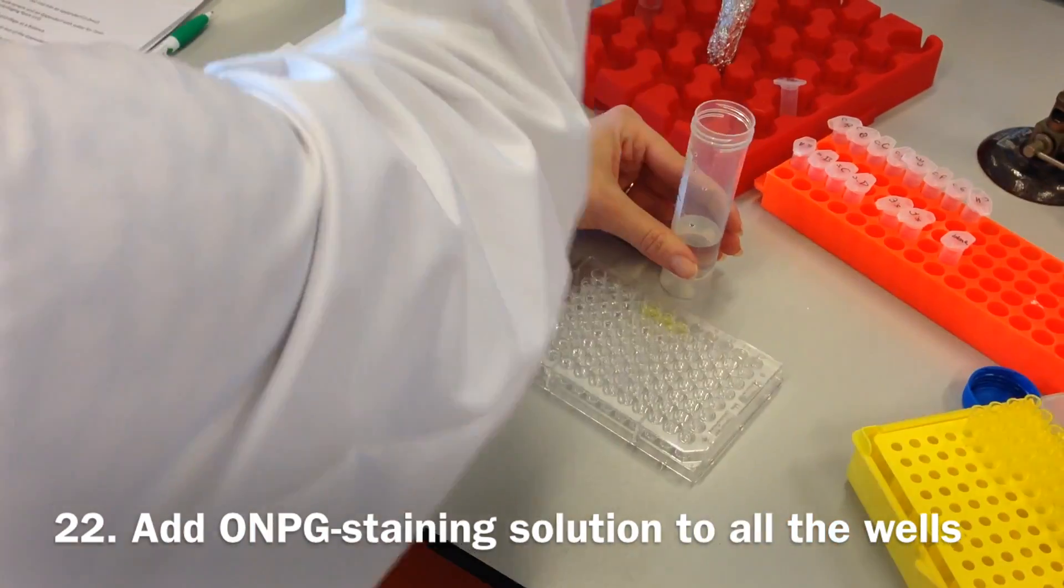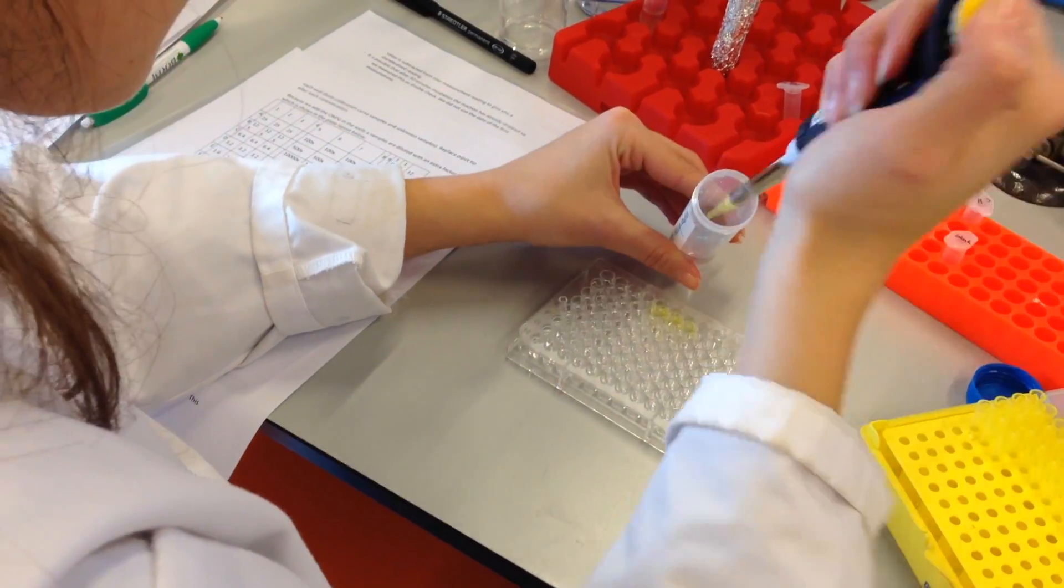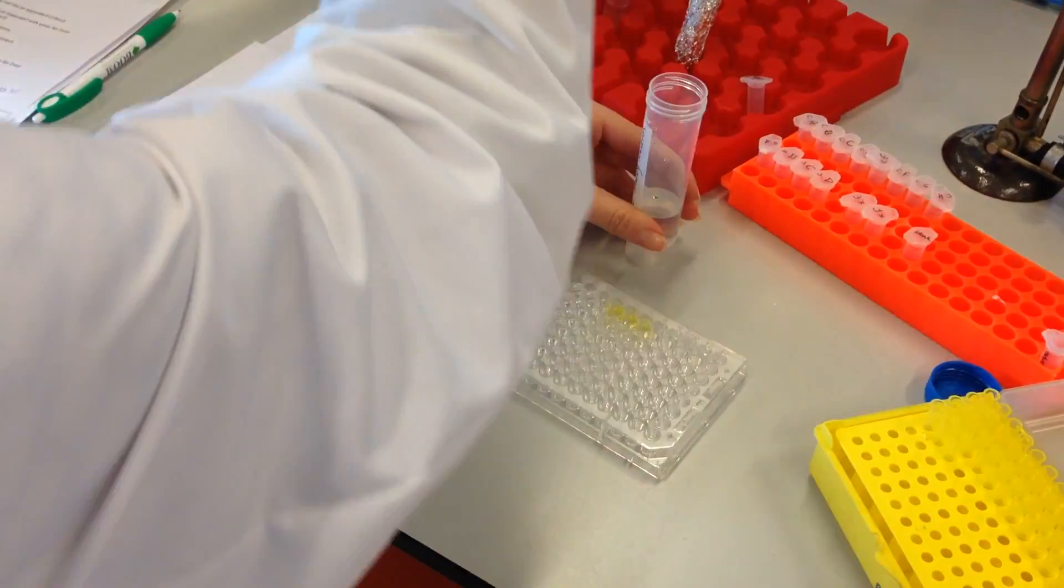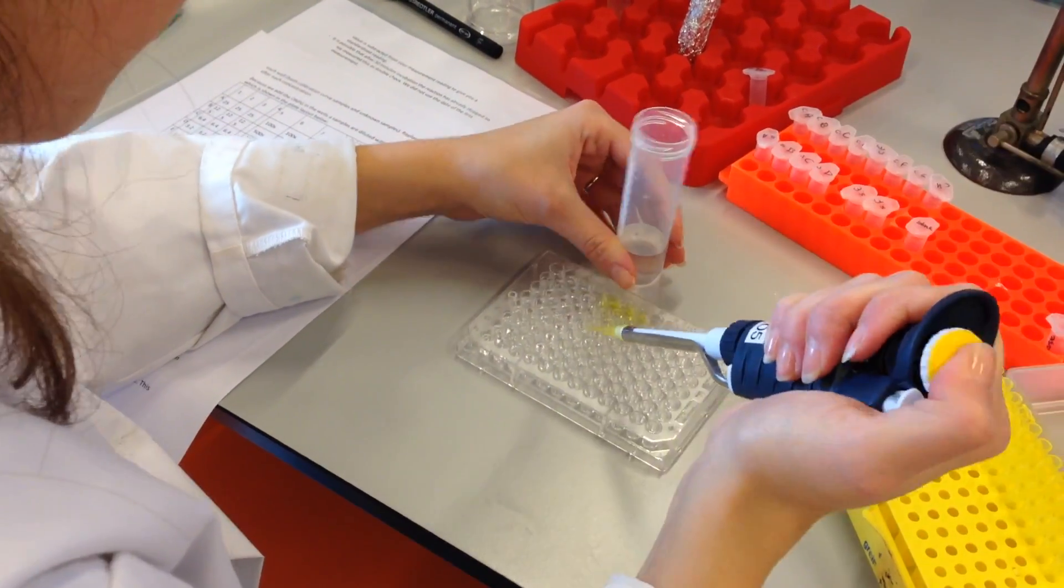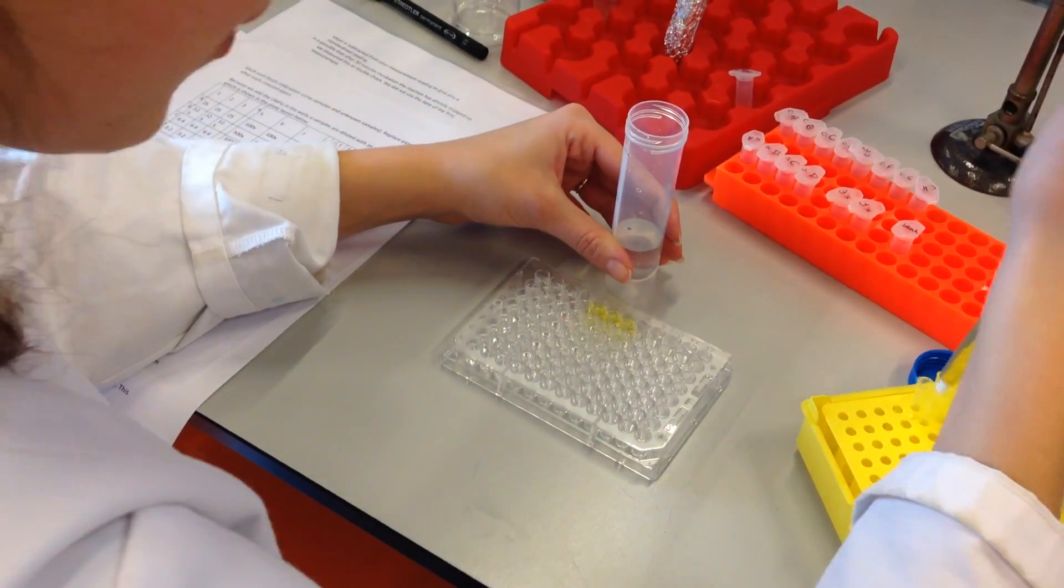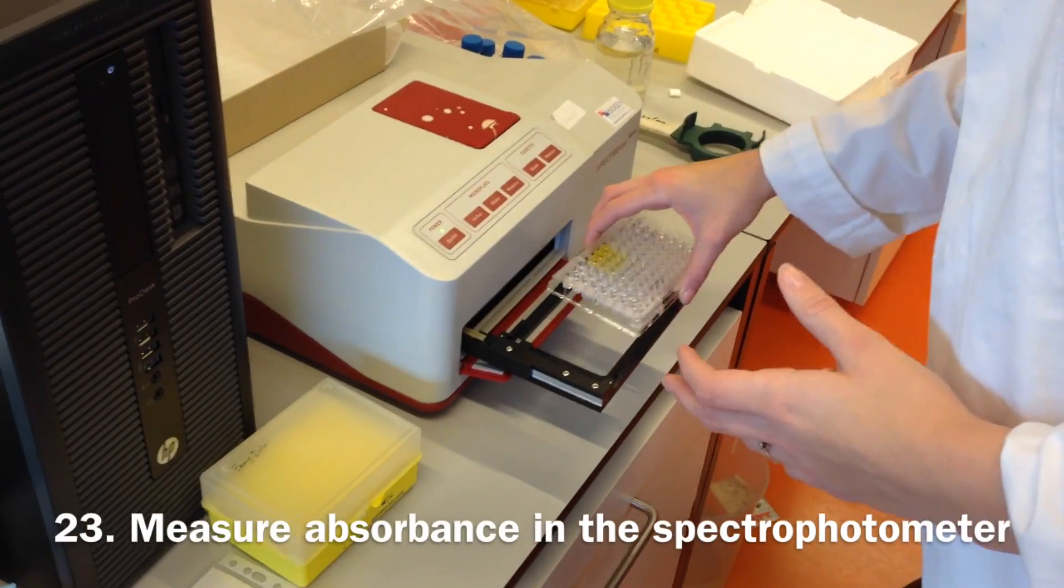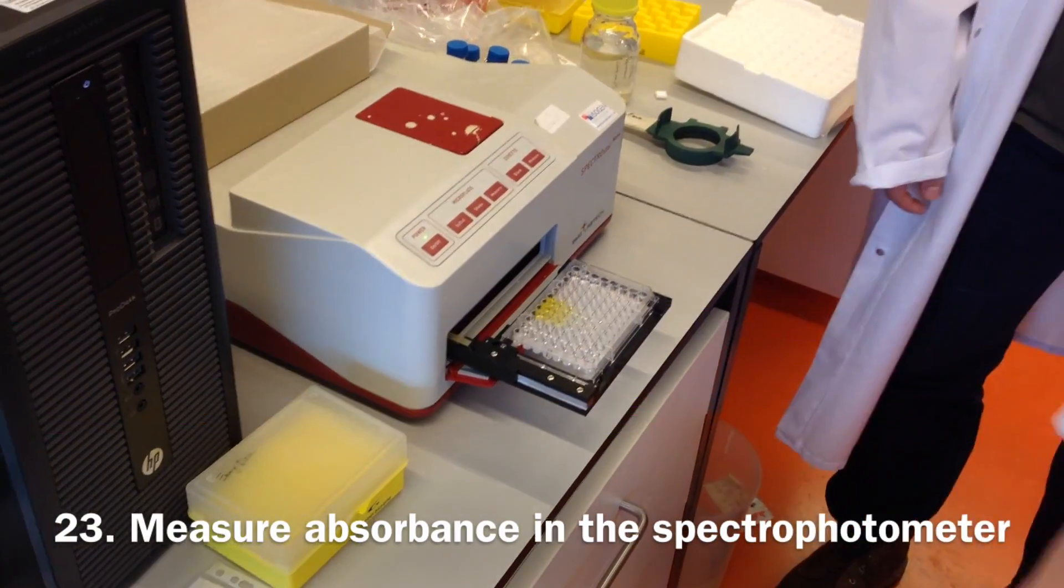Then add the ONPG staining solution to all wells that contain sample. Make sure to replace the pipet tip when pipetting into a different concentration range. Measure the absorbance of the plate in a spectrophotometer.